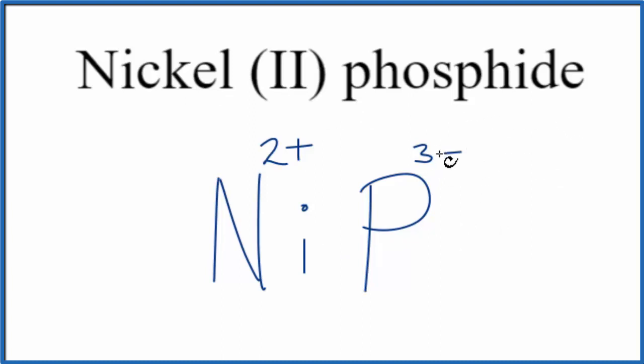One way to do that is called the crisscross method. We take the 3, move it down here, and the 2 over here. That gives us Ni3P2 as the formula for nickel-2-phosphide.